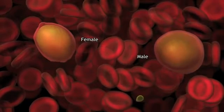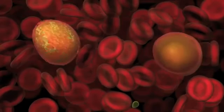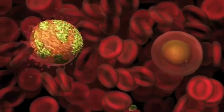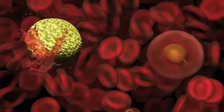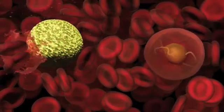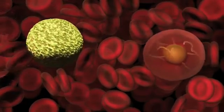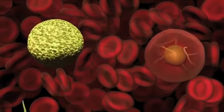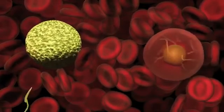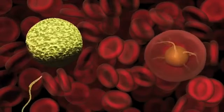The female form of the parasite matures into an egg. The male form takes a while longer to mature into sperm. This sperm is from an earlier feed.